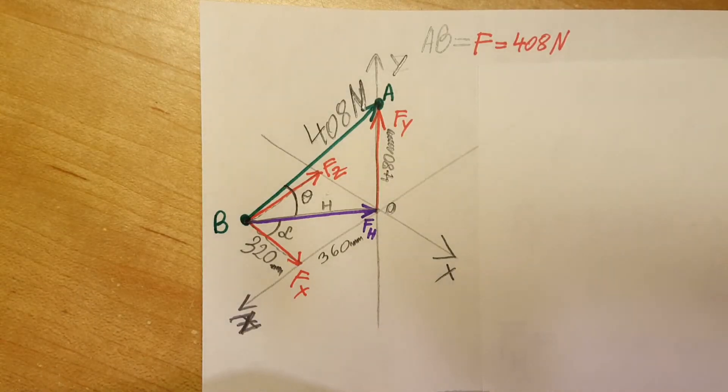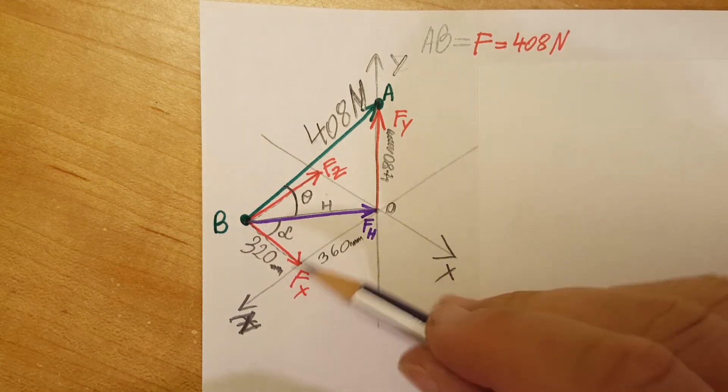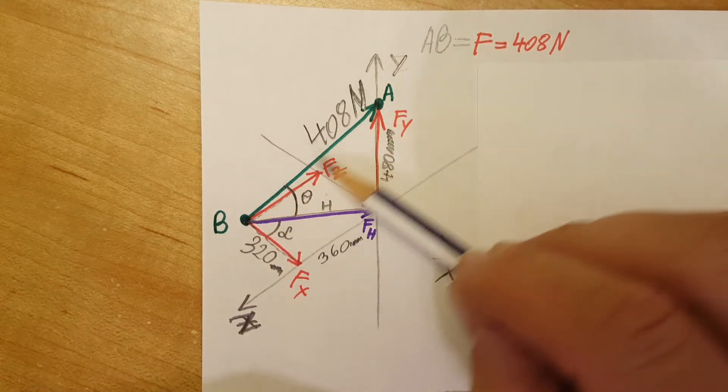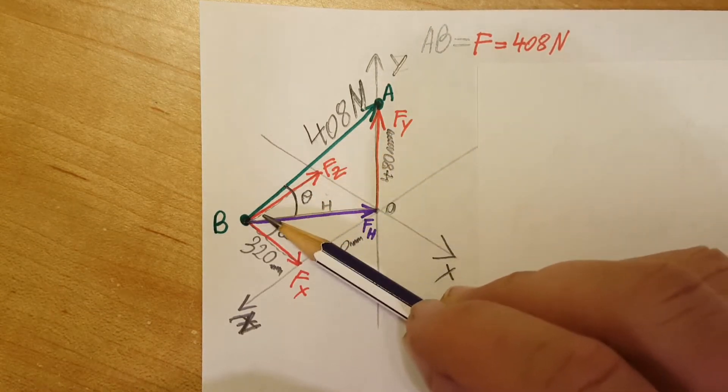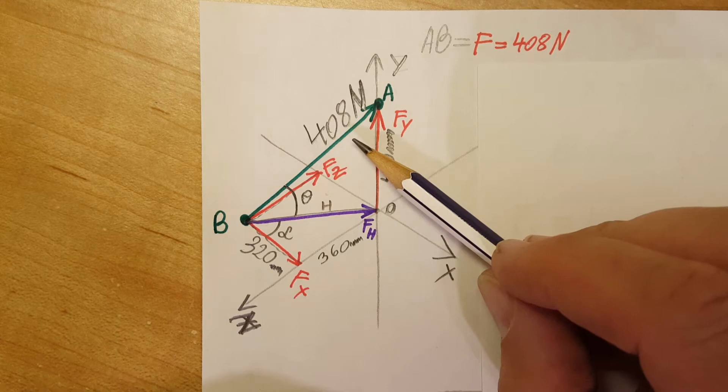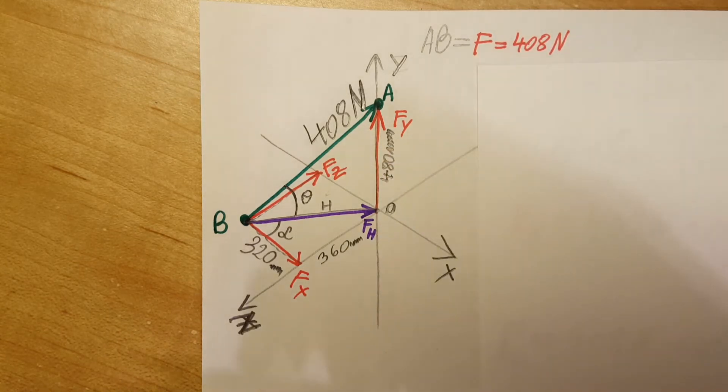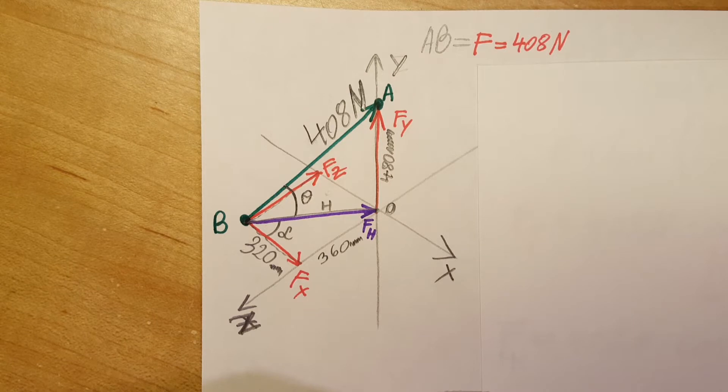Okay, in this problem we have a rectangular plate that is supported by three cables, and one of those three cables is shown right here between A and B. We know that the tension in this cable is 408 newtons. They want us to determine the components of this force exerted on the plate at point B: FY, FX, and FZ.